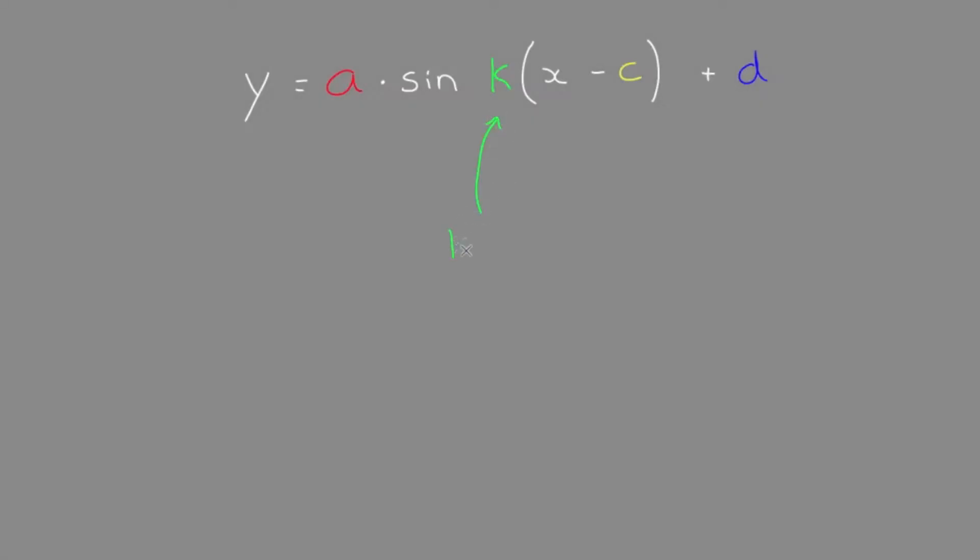We could see that k equals 2, which is positive and greater than 1. What does positive mean? Positive means there's no reflection, so we don't have to do anything.